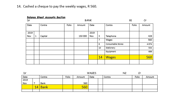On the 14th, we cash the cheque to pay the weekly wages — $560. Same procedure: bank being an asset will decrease as we are spending money on wages. Wages is an expense. Every debit must have a credit — double entry principle applied.